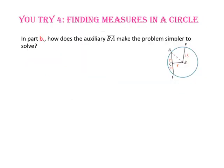Pause the video and do you try number 4. In part B, how does the auxiliary segment BA make the problem simpler to solve? Since segment BA is the hypotenuse of triangle ACB, and we know it is a right triangle, we can use the Pythagorean theorem to find the length of y.